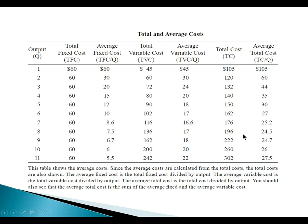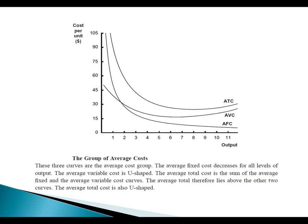Understanding these behaviors is important for profit maximization. On the graph, the average fixed cost curve is continuously declining — initially steeply, then more gradually. The average variable cost curve declines to a minimum point and then increases again — a U-shape. The average total cost curve similarly declines to a minimum point and then starts increasing again.